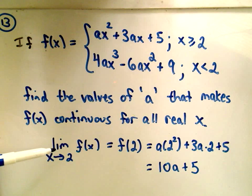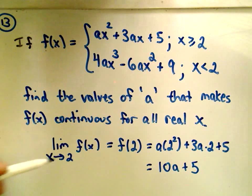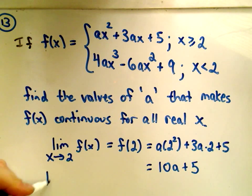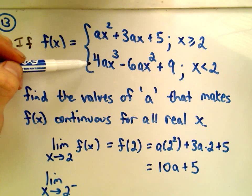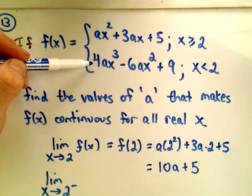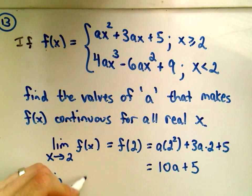So now we have to compute the limit part of it. For the limit to exist, remember the left-hand limit has to equal the right-hand limit. If we look at the limit from the left, we'll have to use the second part of our formula, the 4ax cubed minus 6ax squared plus 9.